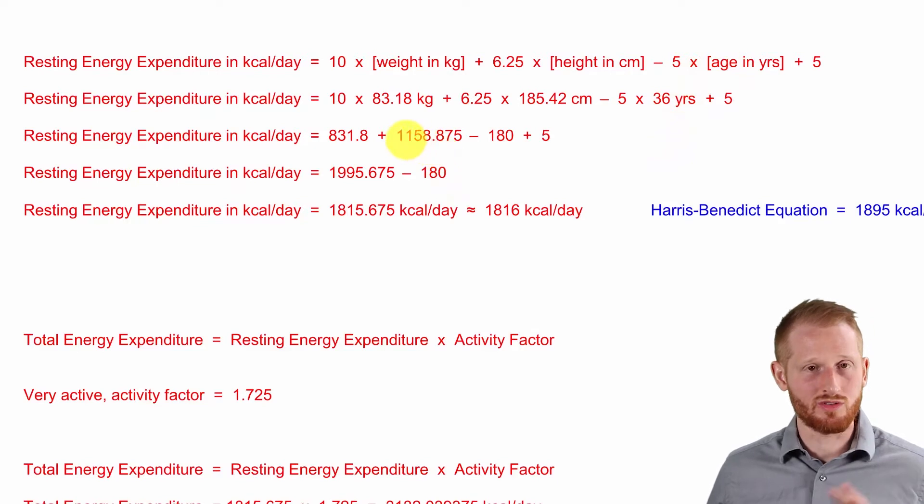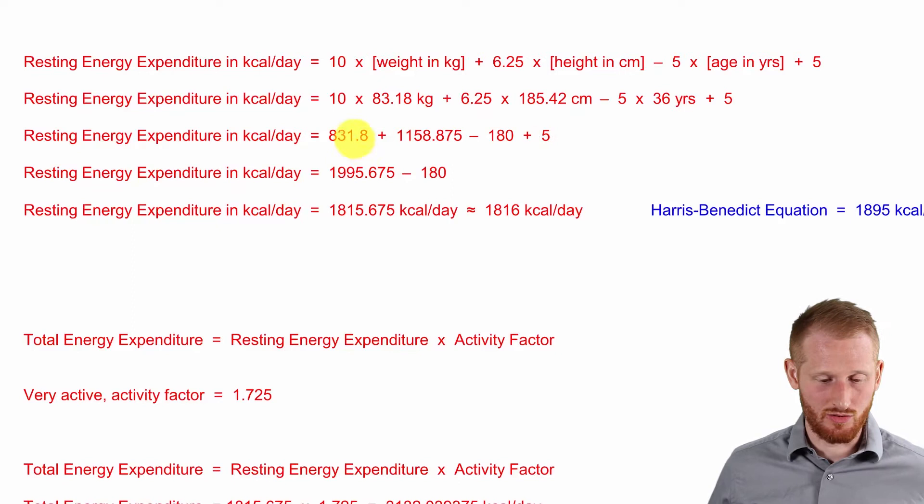So let's start off by doing the multiplication first. I did each one of those, and we end up with these values left. Now let's do all the addition next. So the 831.8, the 1158 point and so on, and then also the 5. We're going to add all those together first.